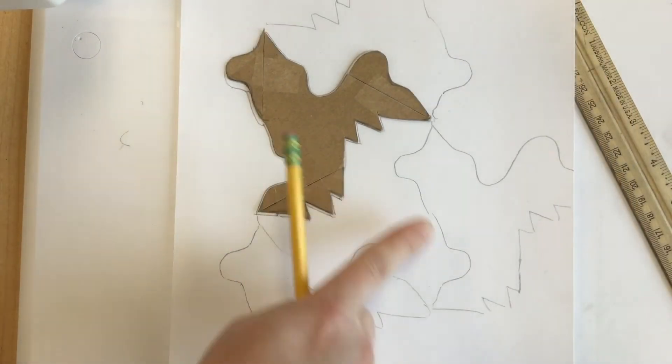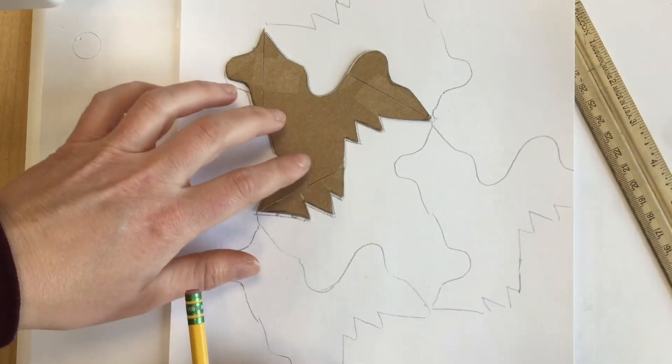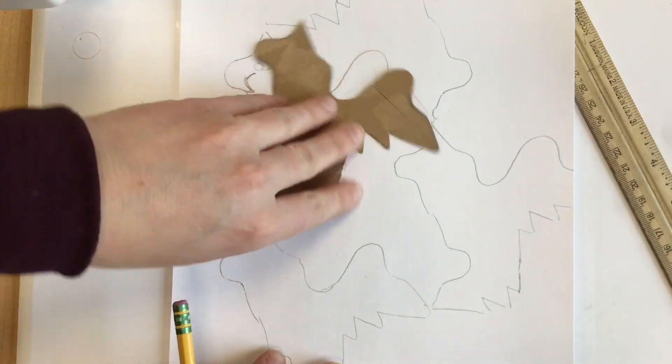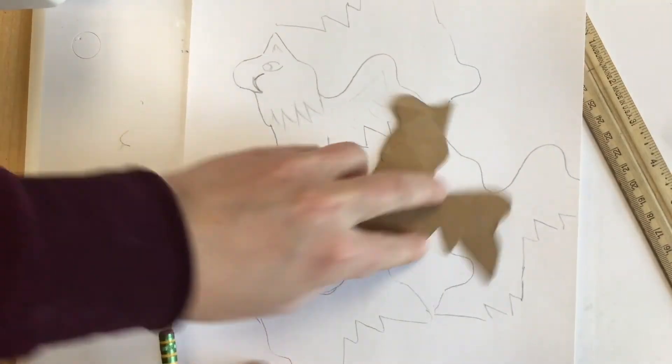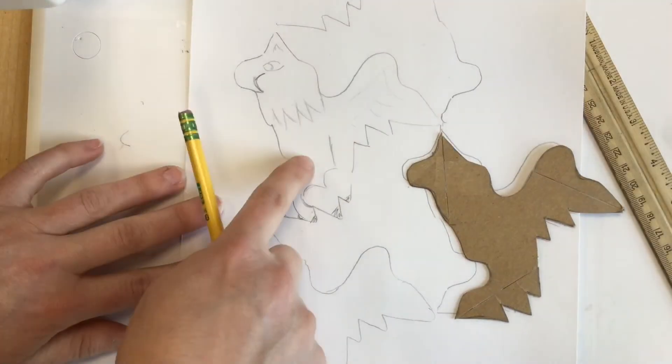Then you set it down on a paper and trace around it. Unlike our tessellating squares, these are going to fit together like upside down, right side up, upside down.